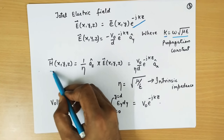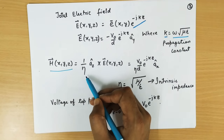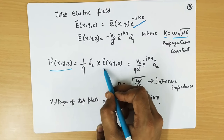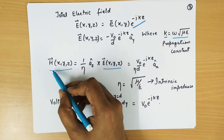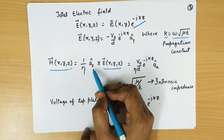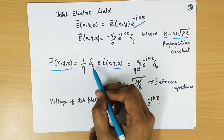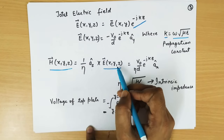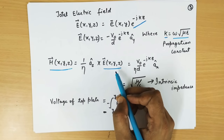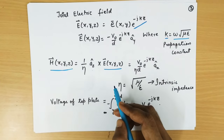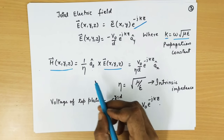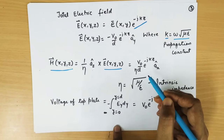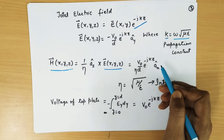Also, k is known as the propagation constant or phase constant, which equals omega times the square root of mu epsilon. From this electric field, we can find the magnetic field, which is 1 over eta times a_z cross E, where eta is the intrinsic impedance. Applying this cross multiplication of a_z and the electric field, since the electric field direction is in the y direction, a_z cross a_y gives minus a_x.